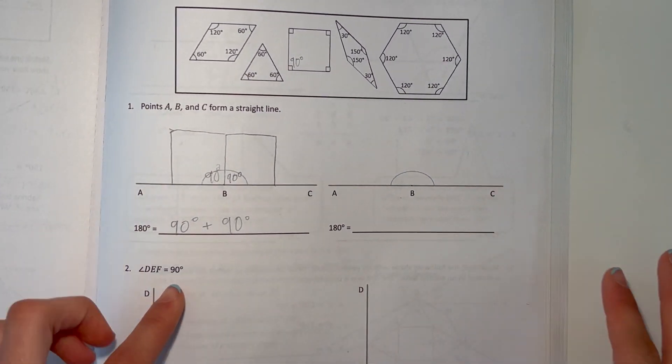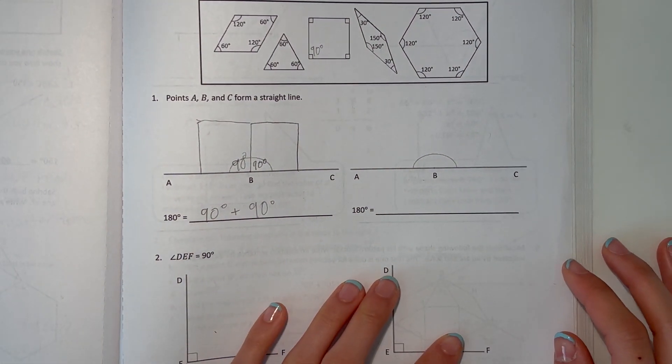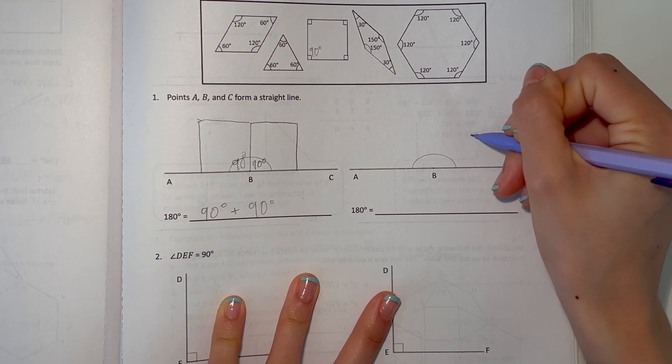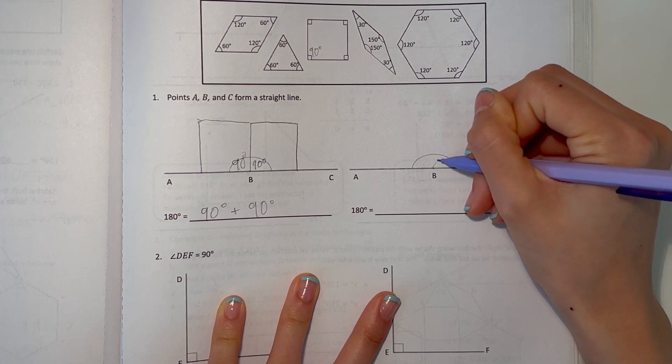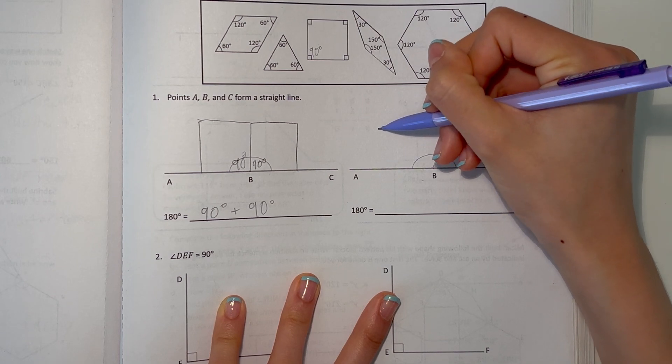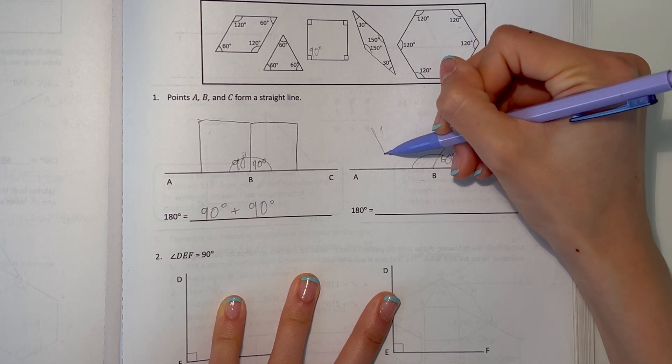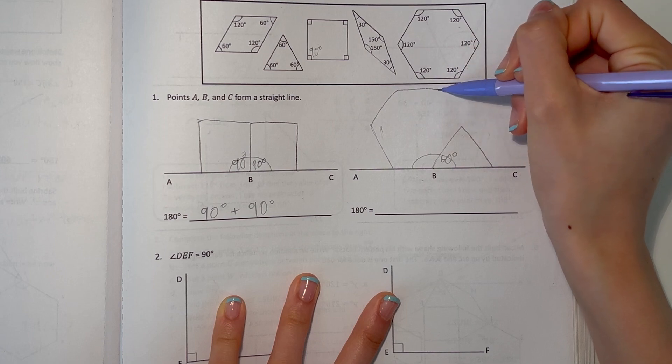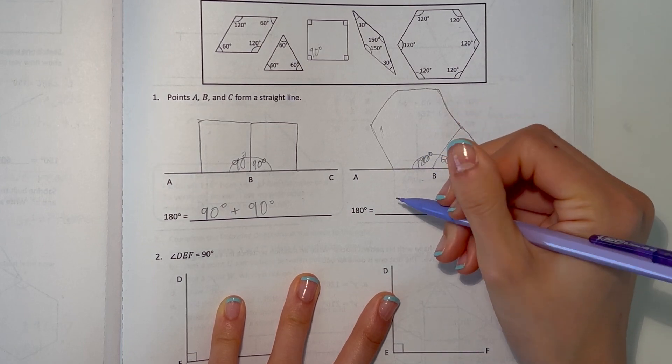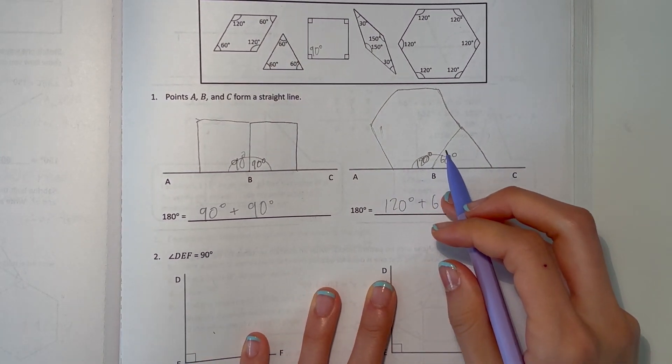Now we have to make 180 a different way. We can do a triangle here. This much is 60 degrees. And over here, that leaves us with the hexagon. This much would be 120 degrees. And now, 120 degrees plus 60 degrees is 180. So this makes 180 degrees.